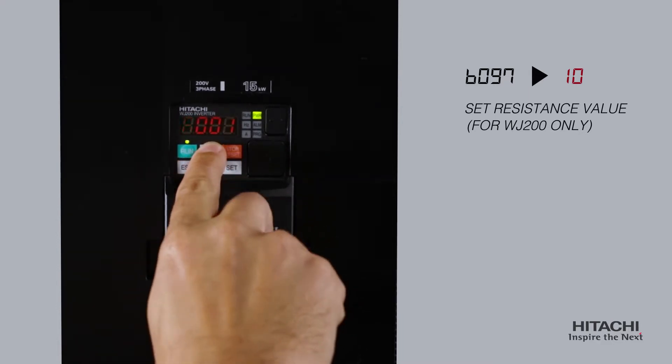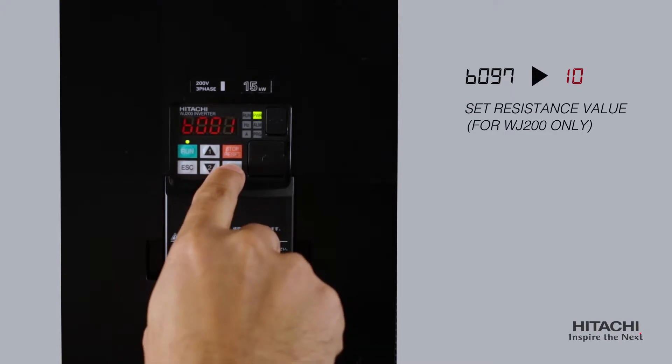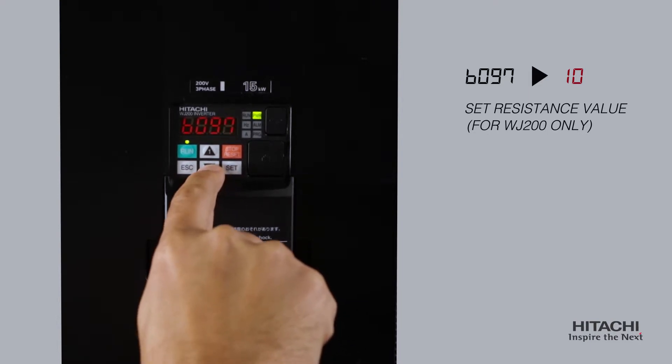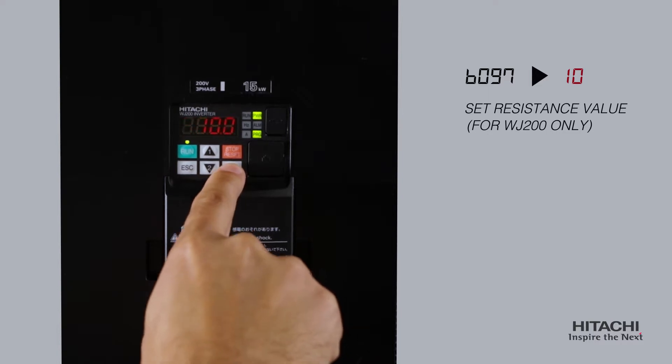Press both the up and down keys at the same time to enter single digit edit mode. Use the set and escape keys to move the cursor left and right, and the up and down keys to change each value. Default is 10.